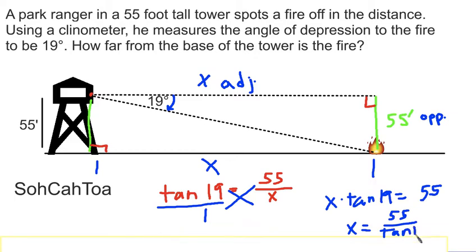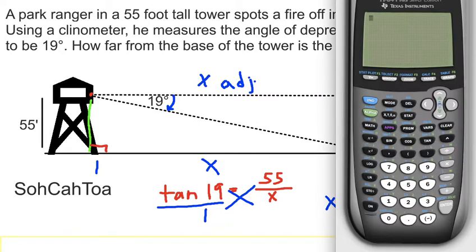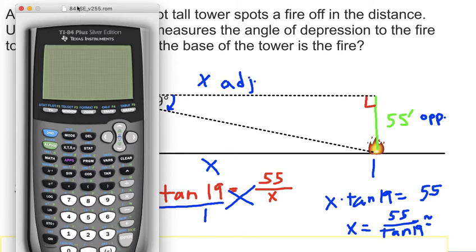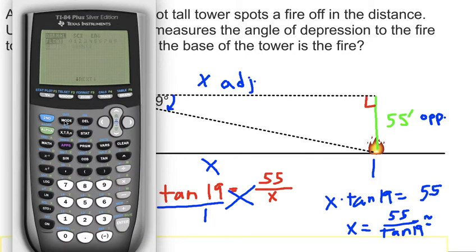All that remains is to enter this into the calculator to actually find what the value of this quantity is approximately. So let's do that. First, I've got to make sure my calculator is in the right mode, and you'll see that it's not. So mode, and then down to degree. So 55 divided by the tangent of 19 degrees will give us a length of 159.7 feet.